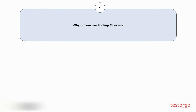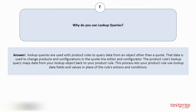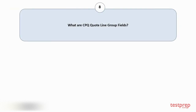Question number seven: Why do you use lookup queries? Lookup queries are used with product rules to query data from an object other than a quote. That data is used to change products and configurations in the quote line editor and configurator. The product rule's lookup query maps data from your lookup object back to your product rule, letting your product rule use lookup data fields and values in place of the rule's actions and conditions.